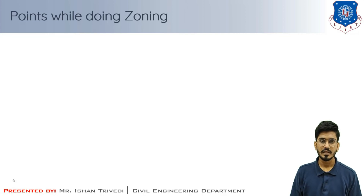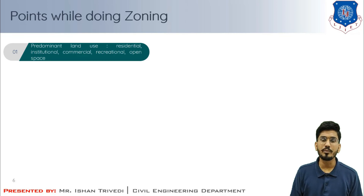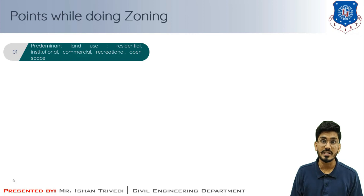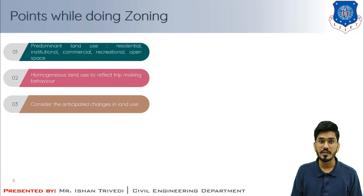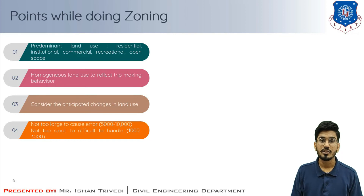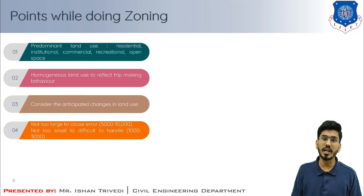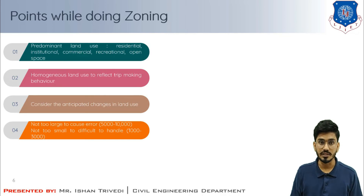Now the points to be kept in mind while doing zoning: land use is the most important factor in establishing zones for transportation surveys. The predominant land uses are residential, industrial, commercial, recreational, and open space. The zone should have homogeneous land use to accurately reflect associated trip-making behavior. Anticipated changes in land use should be considered. Zones should not be too large (causing considerable error) nor too small (causing difficulties in data handling). As a general rule, a population of 1,000 to 3,000 is optimum for small areas, and 5,000 to 10,000 for large areas.